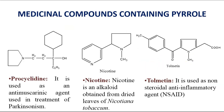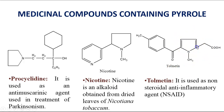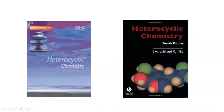These are some of the medicinal compounds that contain the Pyrrole nucleus. We have procyclidine, which is an anti-muscarinic agent used in the treatment of Parkinsonism. Then we have nicotine, an alkaloid obtained from leaves of Nicotiana tabacum. We also have tolmetin, a non-steroidal anti-inflammatory agent. All of these contain Pyrrole as a heterocycle. References for this topic include Heterocyclic Chemistry by Joule and Mills, or Heterocyclic Chemistry by McColl, RSC publication.